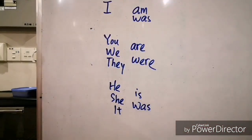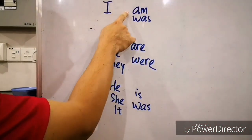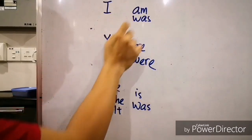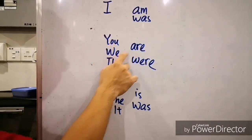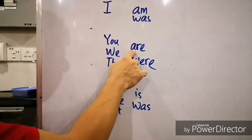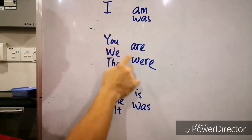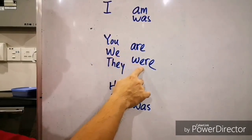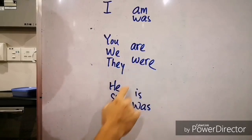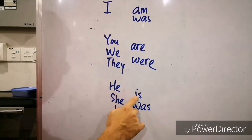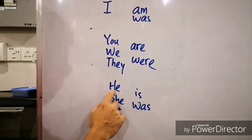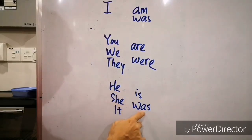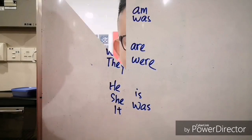Remember these grammar rules. I am, I was, you are, we are, they are, you were, we were, they were. He is, she is, it is. He was, she was, it was.